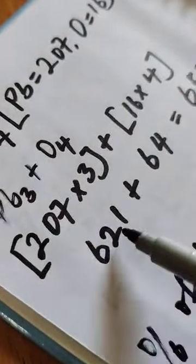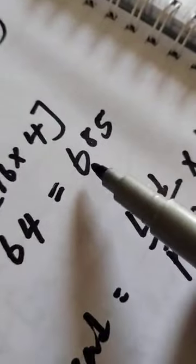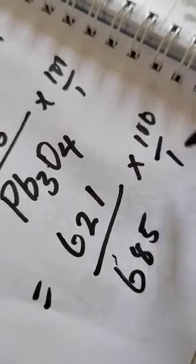Our Pb3 we have seen to be 621. That will give us 621 over our Pb3O4, which we have seen to be 685, times 100 over 1.